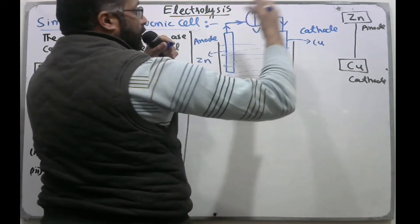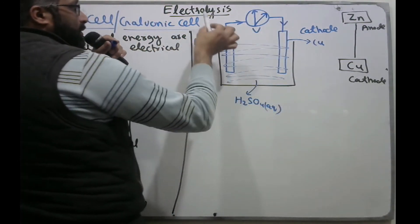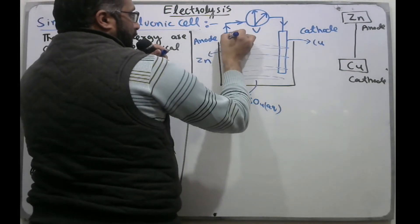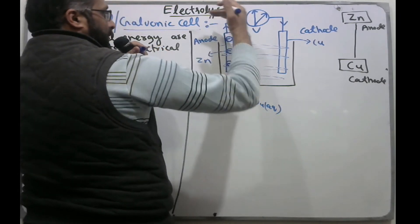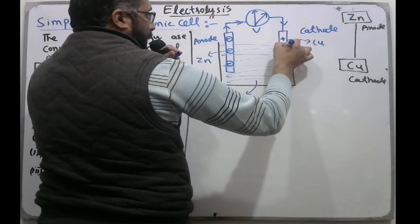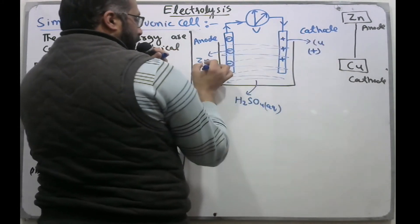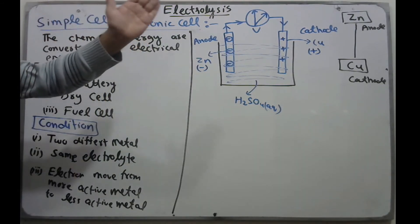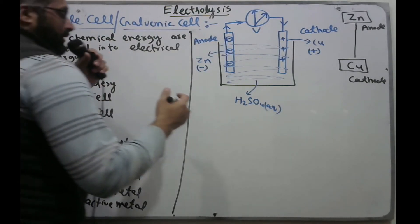When electrons flow, the voltmeter shows the direction of electron flow from zinc to copper. Zinc has a negative charge because electrons are lost from it, and copper has a positive charge. So copper is the positive electrode and zinc is the negative electrode. In this way, electrons flow from zinc to copper, producing electric current.